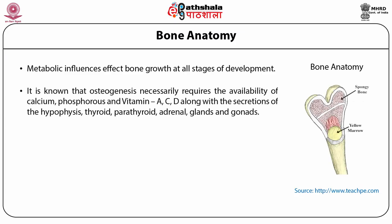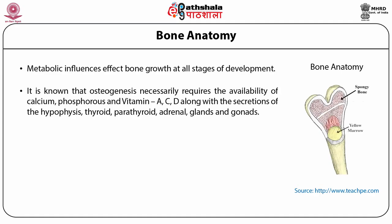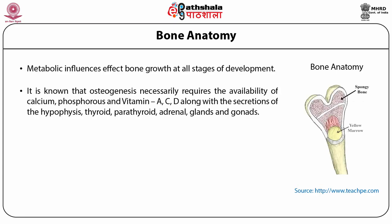Bone anatomy: metabolic influences affect bone growth at all stages of development. It is known that osteogenesis necessarily requires the availability of calcium, phosphorus, and vitamins A, C, and D, along with the secretions of the hypophysis, thyroid, parathyroid, adrenal glands, and gonads. All these processes are therefore essential for skeletal form and dimensions.